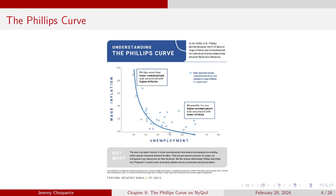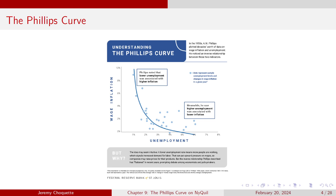A lower unemployment rate means more people are working, which signals increased demand for labor. That puts upward pressure on wages, and companies raise prices for their products. But that inverse relationship Phillips described has 'flattened in recent years,' promoting debate among economists and policymakers — and that's what we'll talk about today.